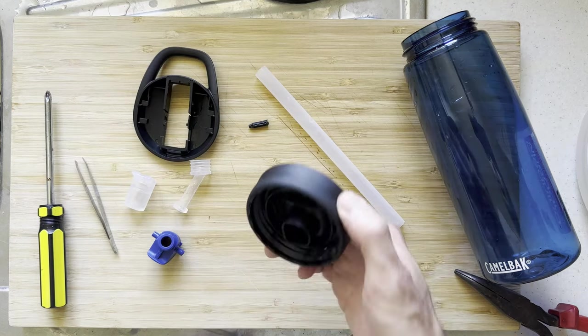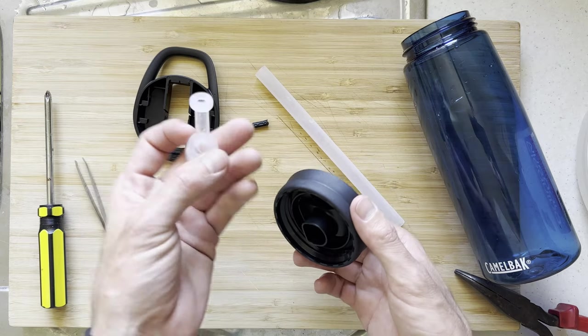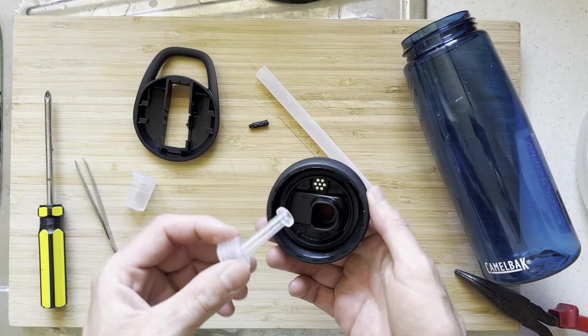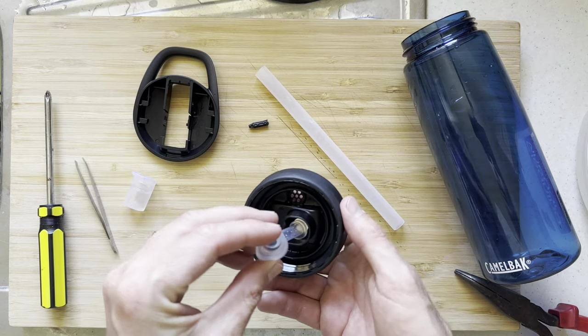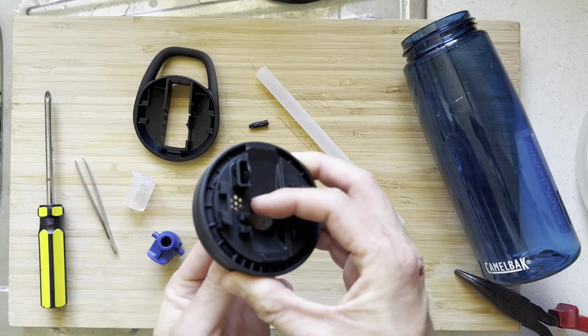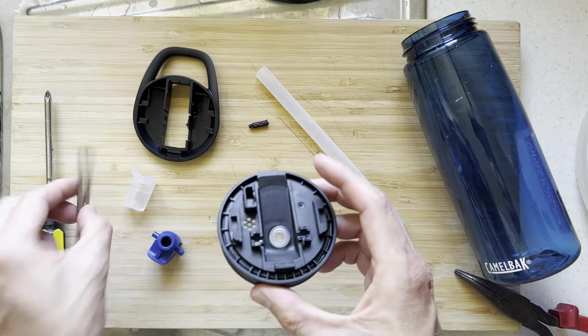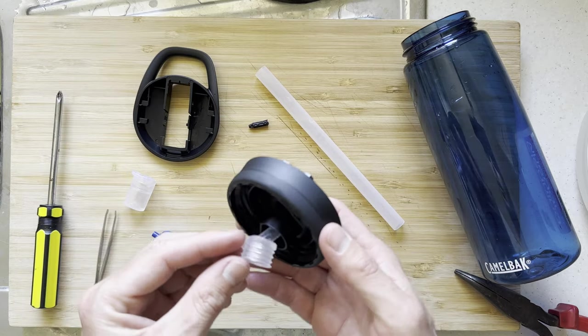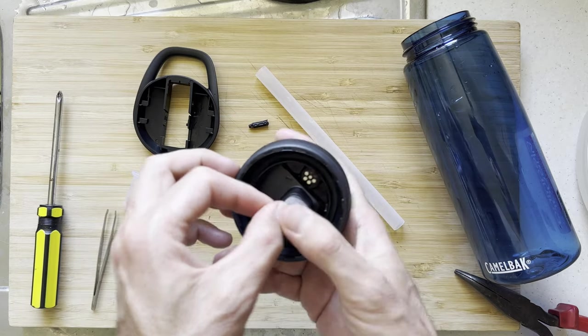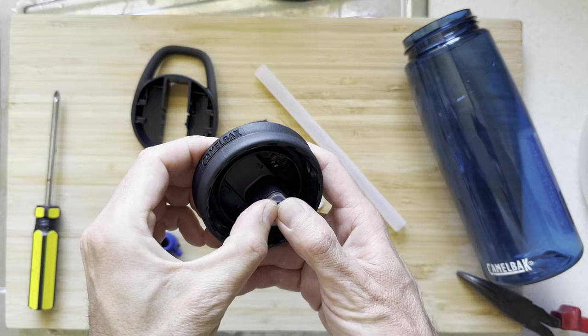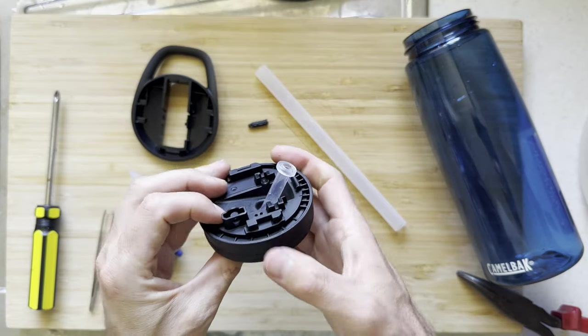To begin, we want to grab the bottom piece of the lid and we want to grab this rubber straw as well, and we're going to go ahead and put that through. Now it may just push all the way through. If you need some help, you can use your tweezers to get this through, but for me it just goes all the way through, and I can go ahead and push this into place.